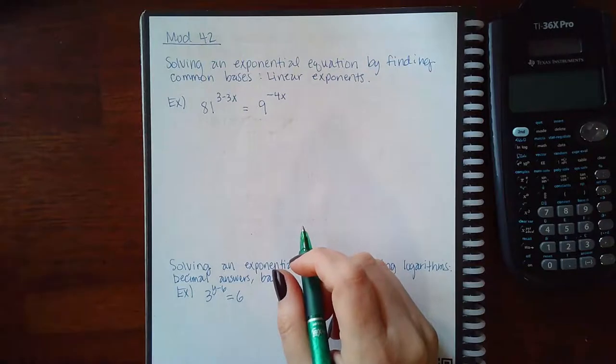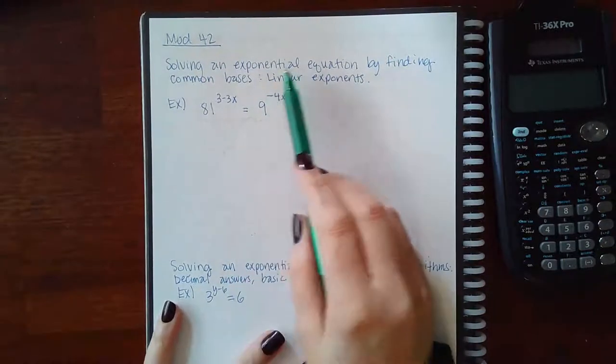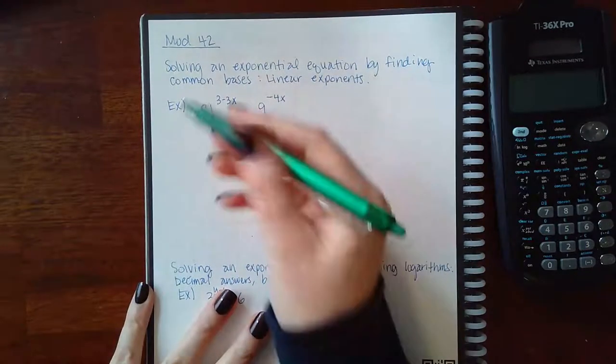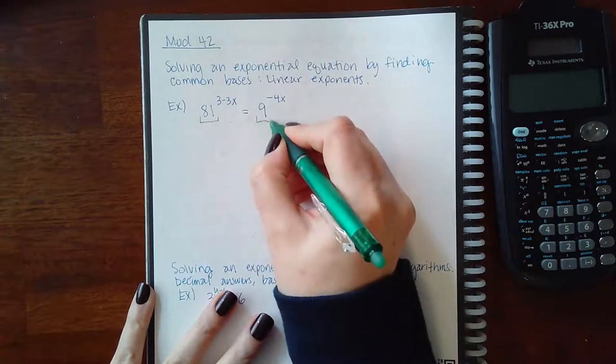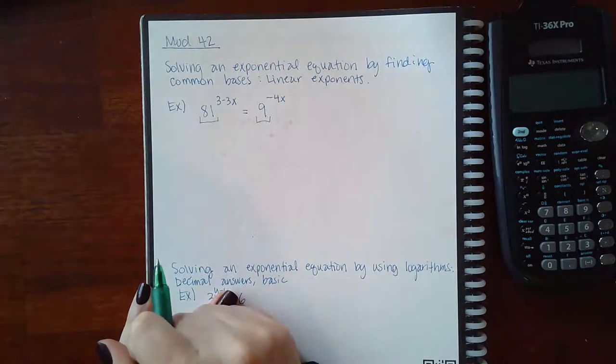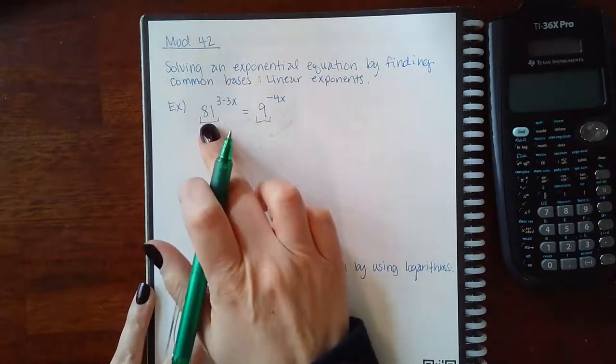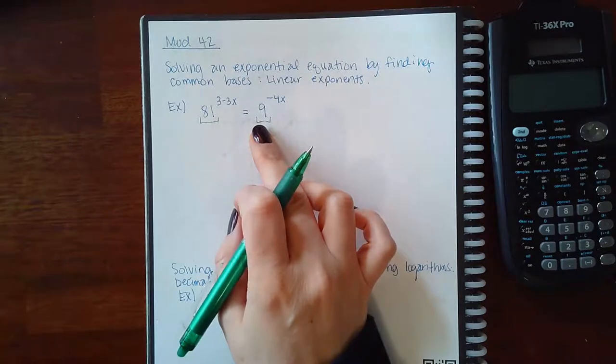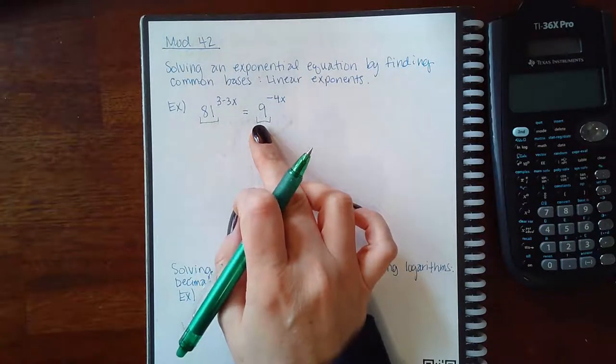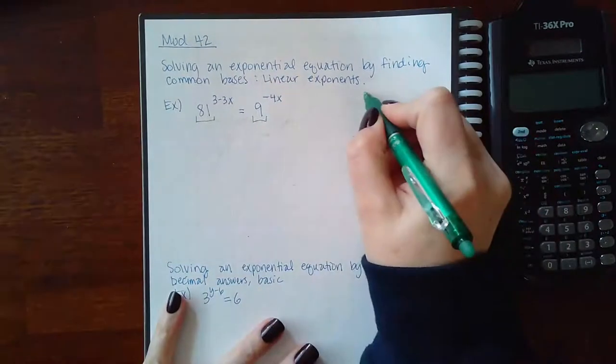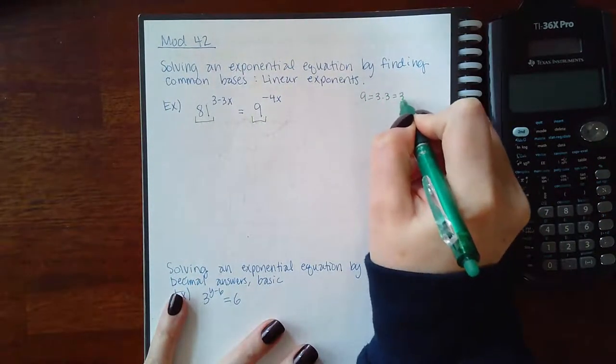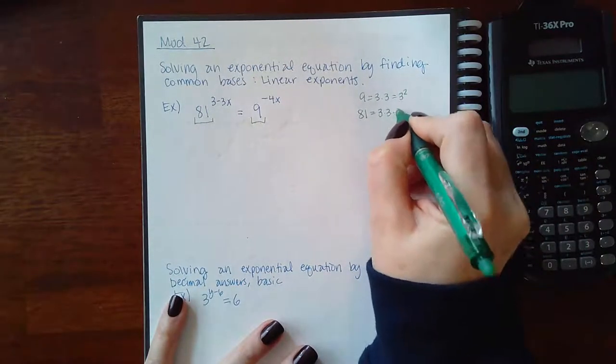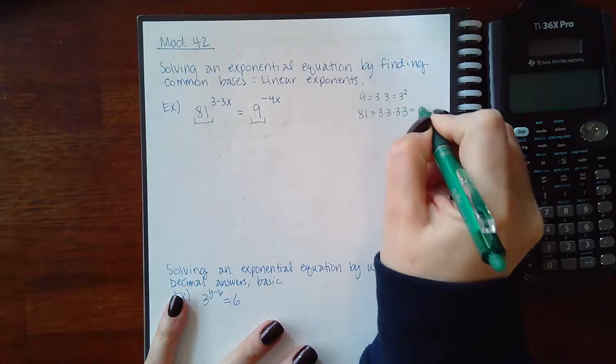We're going to use the same sort of techniques as we did in the other section. This problem is exponentials with common bases. They want you to understand that this base and this base share a lower common base. The easiest way to do it is to put it into its prime form. So I know that 9 is 3 times 3 which is the same thing as 3 squared. And I know that 81 is 3 times 3 times 3 times 3 which is 3 to the 4th power.